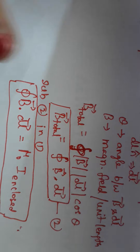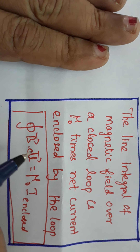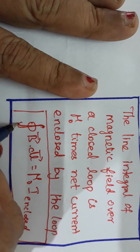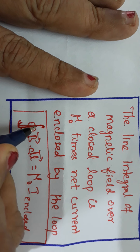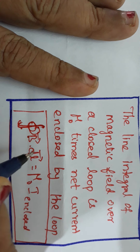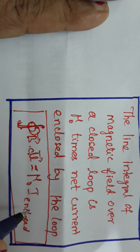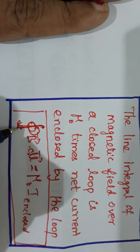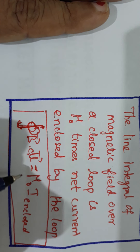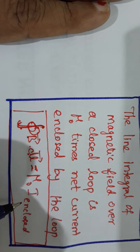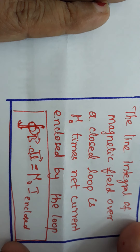Now we will give the statement for that expression. The line integral of the magnetic field taken over a closed loop is equal to μ₀ times the net current enclosed by the loop. This might be a two-mark question children — for two marks it is enough if you write the statement. Thank you.